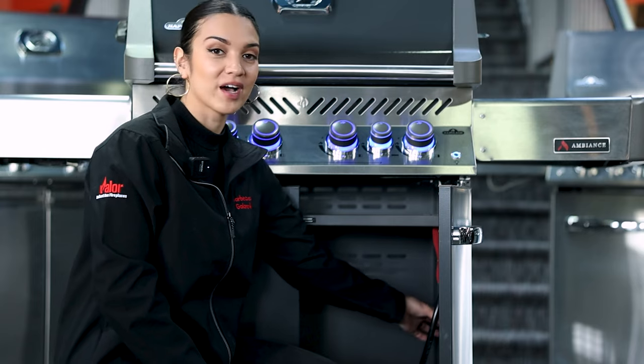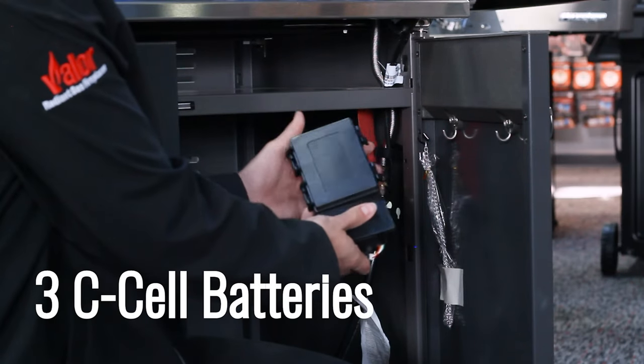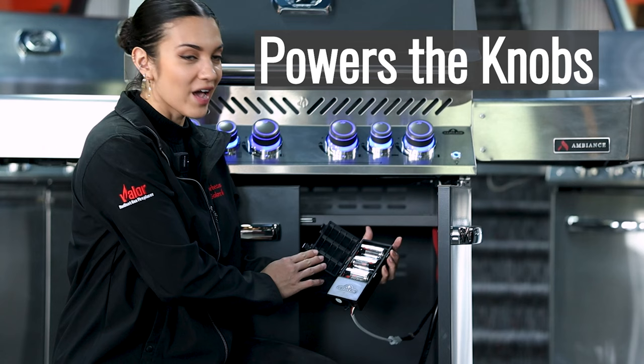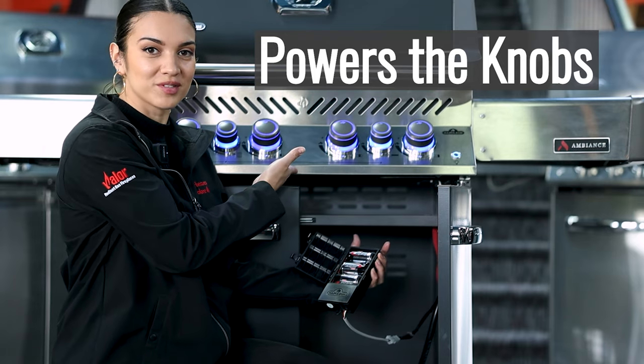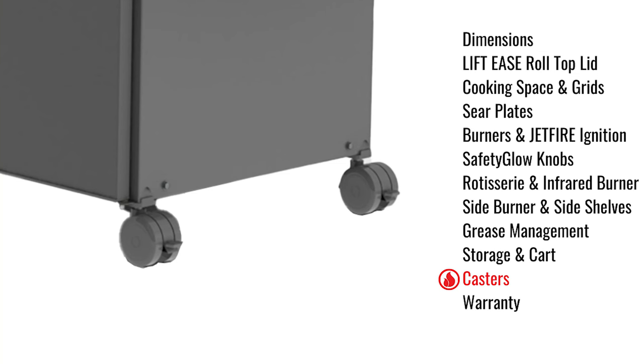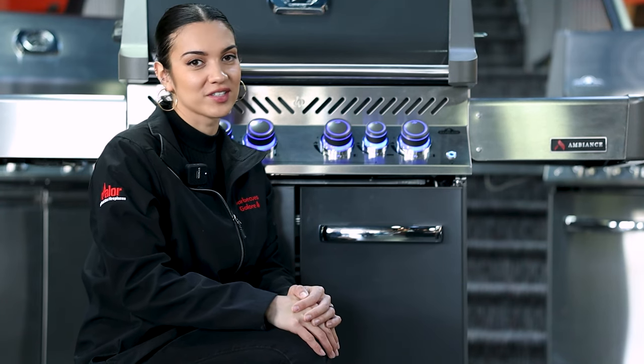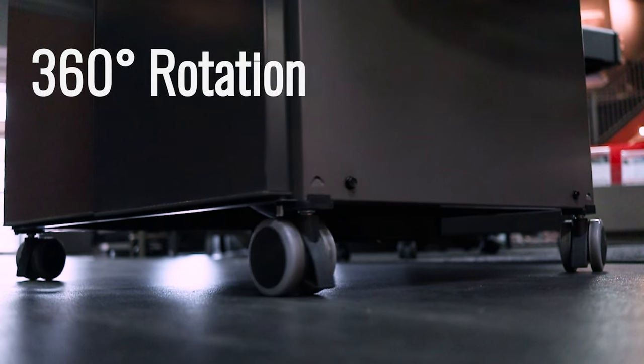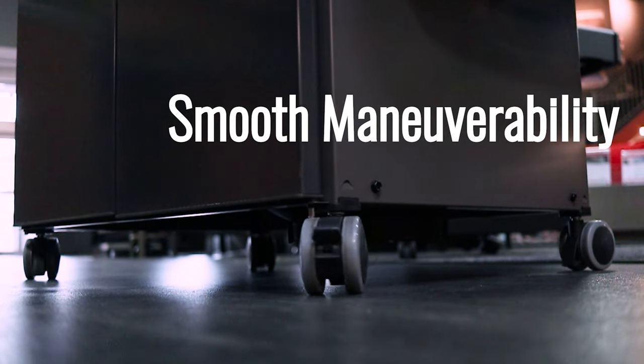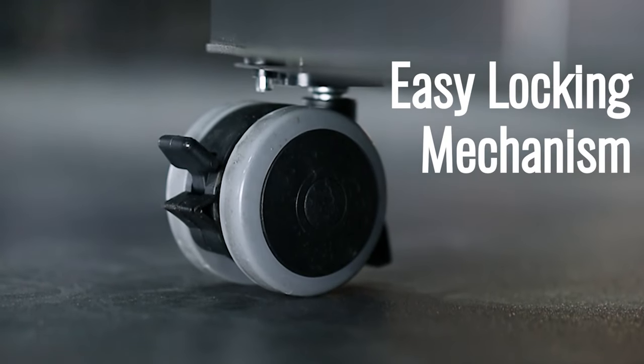On the side of the barbecue, you'll find the black box. This black box holds a few C-cell batteries and is what powers the backlit knobs. Now that we've finished the cart, let's move on to the casters. The casters give you a 360-degree spin, giving you easy maneuverability. They lock with a flick of your finger.